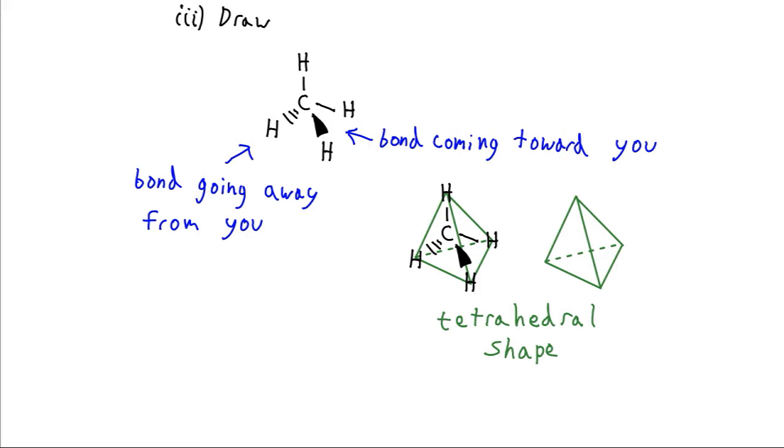Now for our methane molecule here, if we were to connect all the corners, we would get this shape, which is a tetrahedron. And so we say that our methane has a tetrahedral geometry.